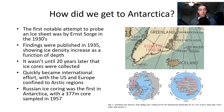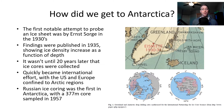How did we get to Antarctica and why are we getting ice there? The first notable attempts to probe the ice sheet were by Ernst Sorge in the 1930s; his findings were published in 1935, showing ice density increased as a function of depth. It wasn't until 20 years later that ice cores were starting to be collected. This quickly became an international effort, with the United States and Europe confined to Arctic regions, while the Russians were coring at sites like Vostok, being the first in Antarctica with a 377-meter core sampled in 1959.